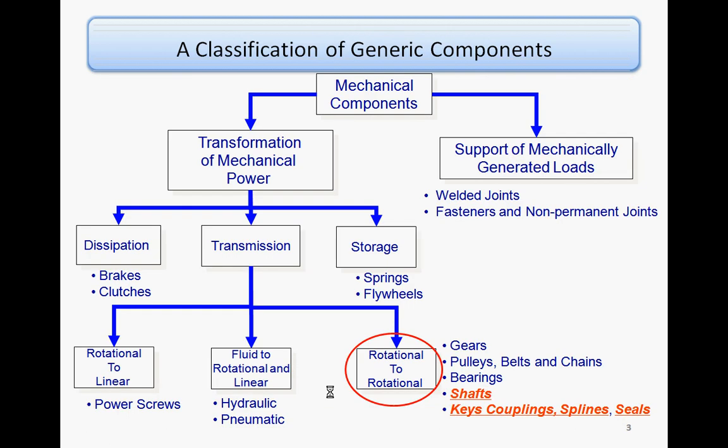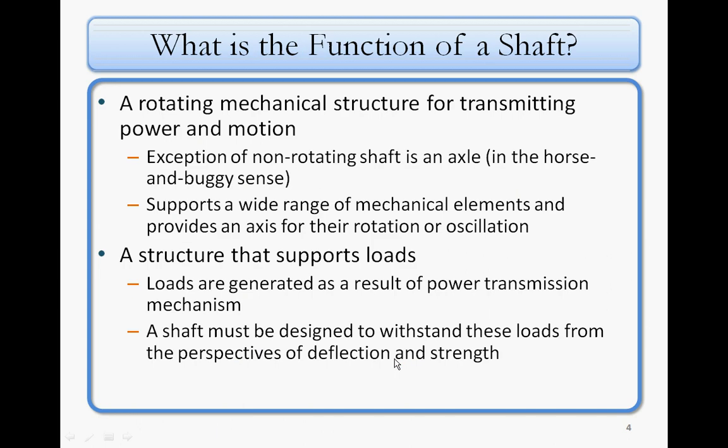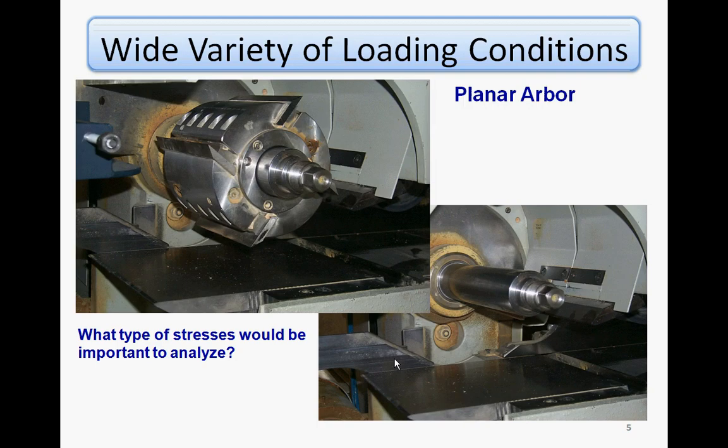This diagram we've seen a number of times already, so we are still at the gear location. What is the function of a shaft? A shaft is a rotating mechanical structure which basically transmits power into motion. There are stationary shafts and non-stationary shafts. A shaft is also used to support different kinds of loads — it can carry a gear, a pulley, a sheave, or a sprocket. When you look at this picture of a shaft carrying a planar rubber — basically a cutting tool — one question is: what kind of loading condition or stress would the shaft feel for this kind of system?